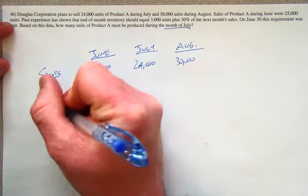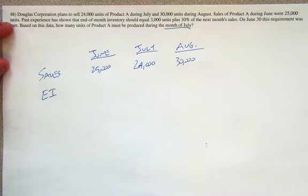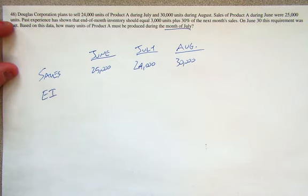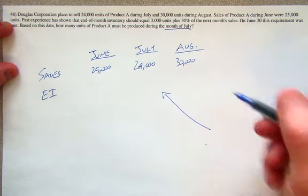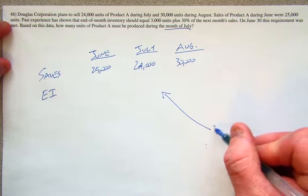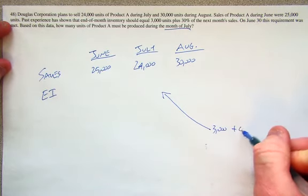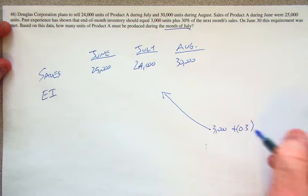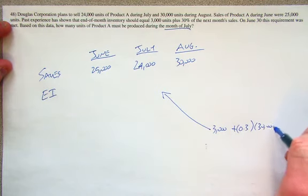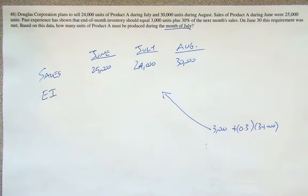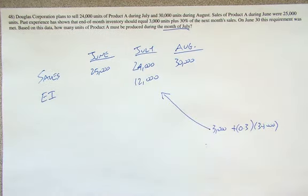On top of that, our ending inventory, we're going to need to produce. The ending inventory is going to be 3,000 plus 30% of the next month's sales. Let's just do a little side calculation right here. Ending inventory on July 30th would be 3,000 plus 30% of August's predicted 30,000. If we do the math on that, 0.3 times 30,000 is 9,000. Add 3,000 to that number. Our desired ending inventory at the end of July will be 12,000.